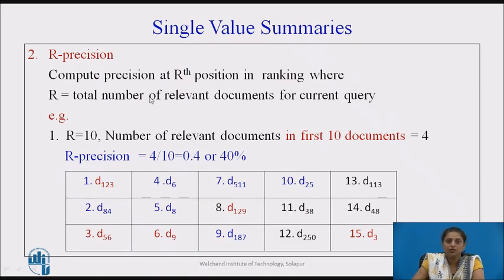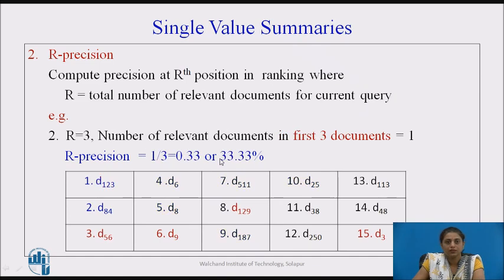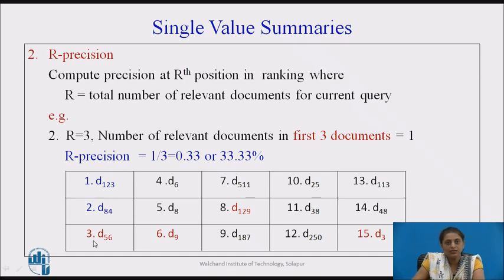The second method is R-precision. Compute the precision at the Rth position in the ranking, where R is the total number of relevant documents for the current query. For example, if there are 10 relevant documents, we look at the first 10 documents in the answer set and count how many are relevant — here 4 are relevant, so R-precision is 0.4 or 40%. In a second example with 3 relevant documents, only 1 of the first 3 retrieved is relevant, so R-precision is 0.33.